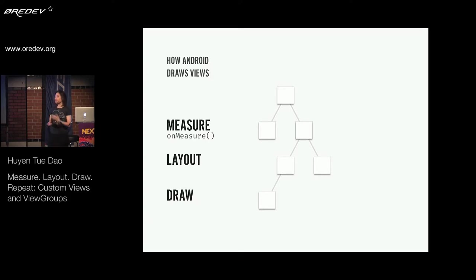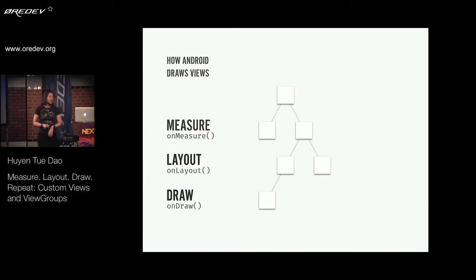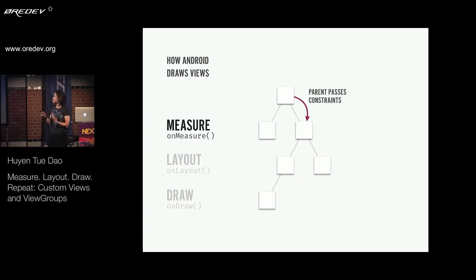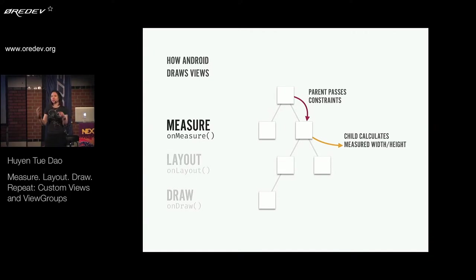As developers, we have three entry points into the system. The first is onMeasure, the second is onLayout, and the third is onDraw. Each of these is a method that you're going to override to insert yourself into this process. In onMeasure, a parent that has several child views will pass each of those child views some constraints — some bounds on how big that child can be. That child will take in those constraints and figure out how big it wants to be given its content and those constraints from the parent. It will use that information to generate some measured width and height — its desired width and height — then store it inside itself and wait for the parent to retrieve that information later.